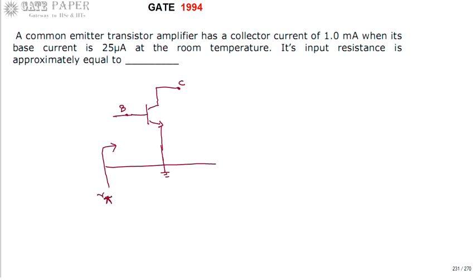So rpi can be written as input voltage divided by input current. This is IB. So rpi can be written as Vbe divided by IB. This you can get from the equation as Vt divided by IB.